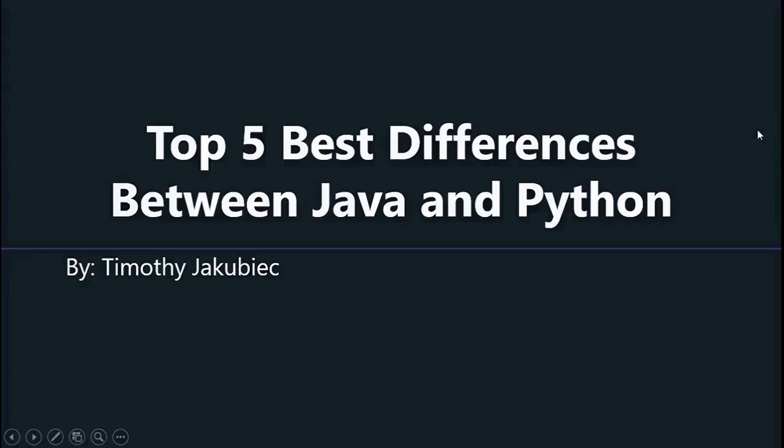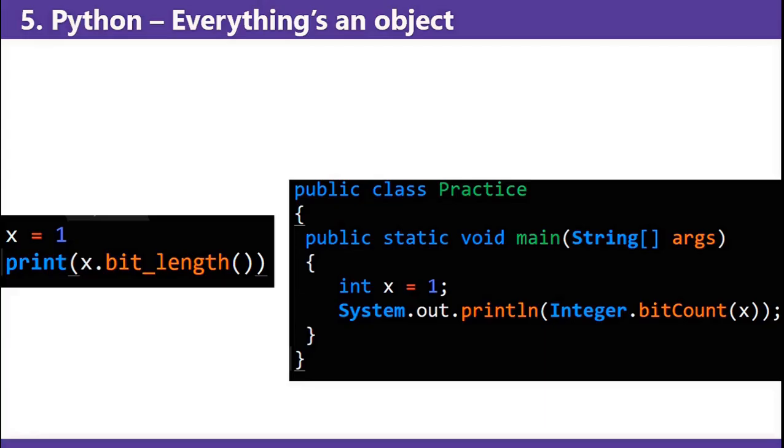Hello and welcome back to jcubication. Today is going to be the top five best differences between Java and Python. Number five: Everything's an object in Python.